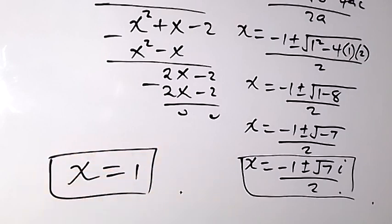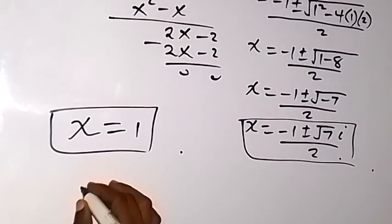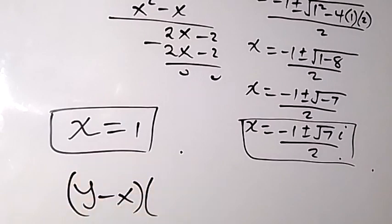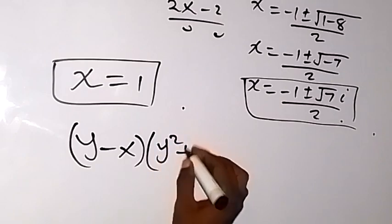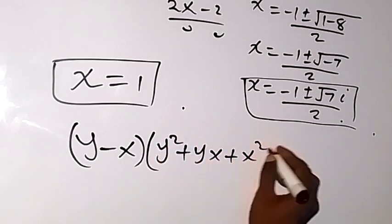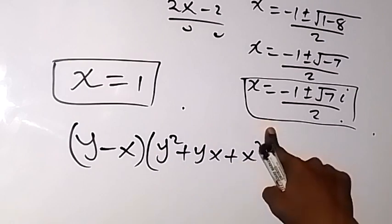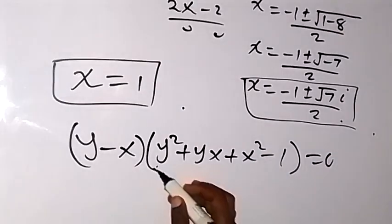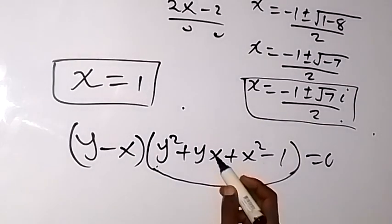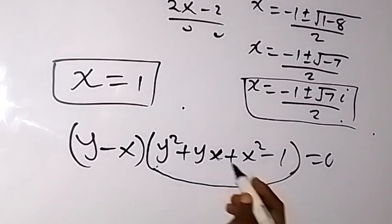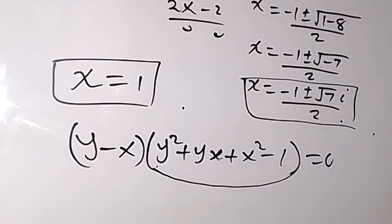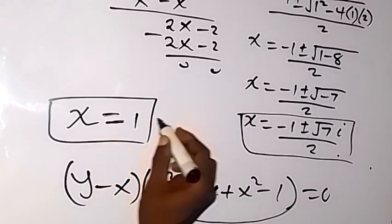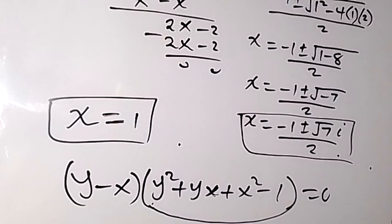Since that gives complex roots, it yields no real solution. Considering the other case — y squared plus yx plus x squared minus 1 equals zero — this also yields only complex solutions. Therefore, the only real solution to this problem is x equals 1, and we have come to the end of the solution.